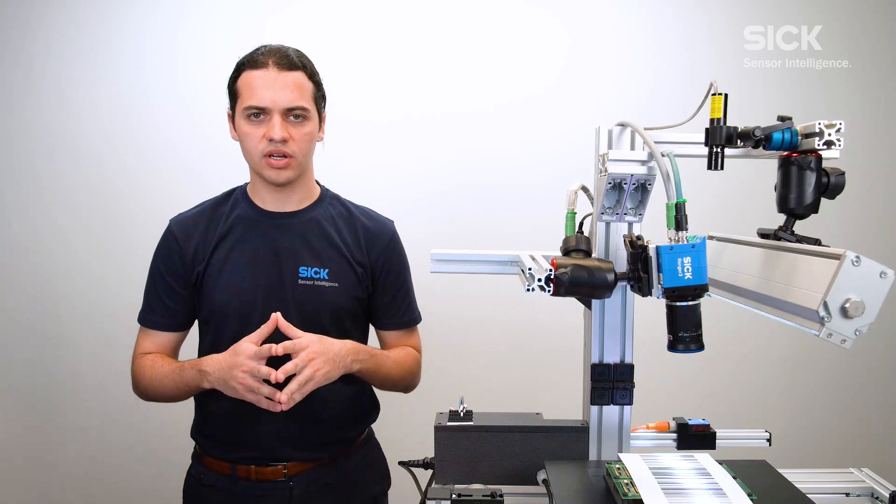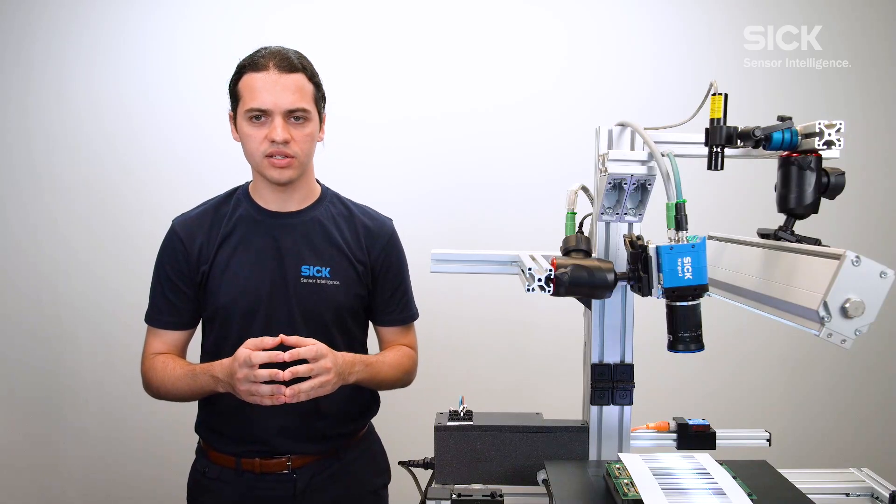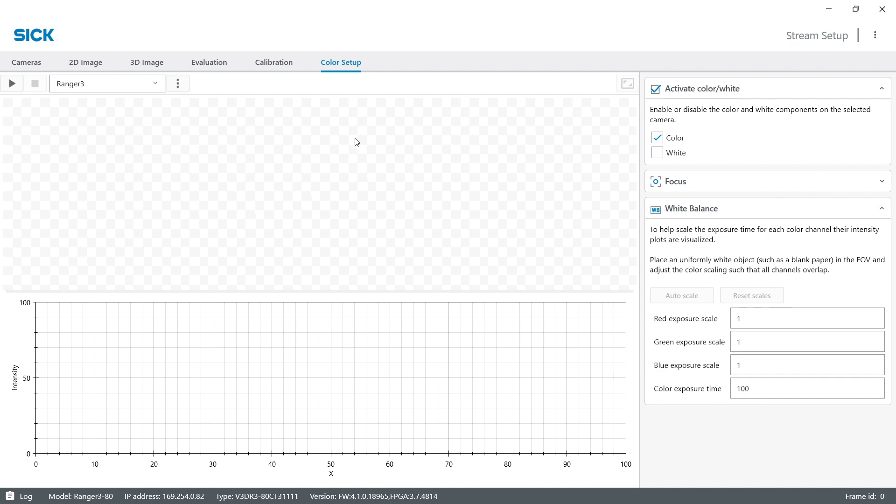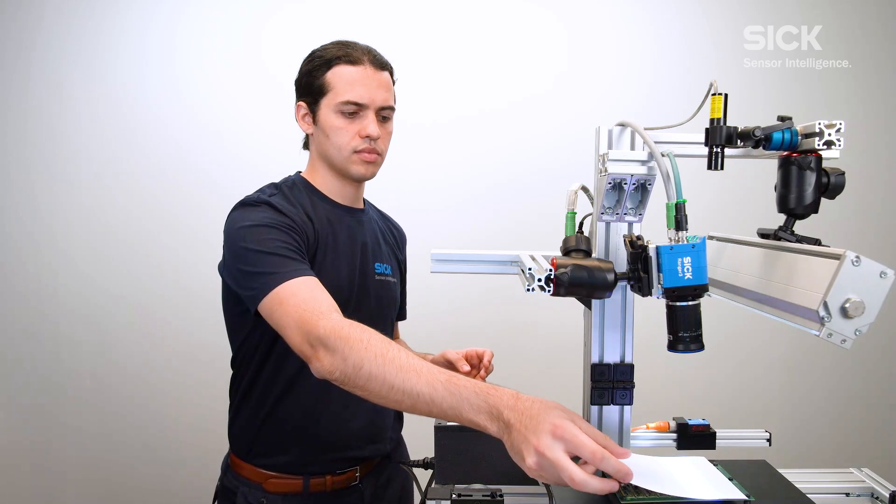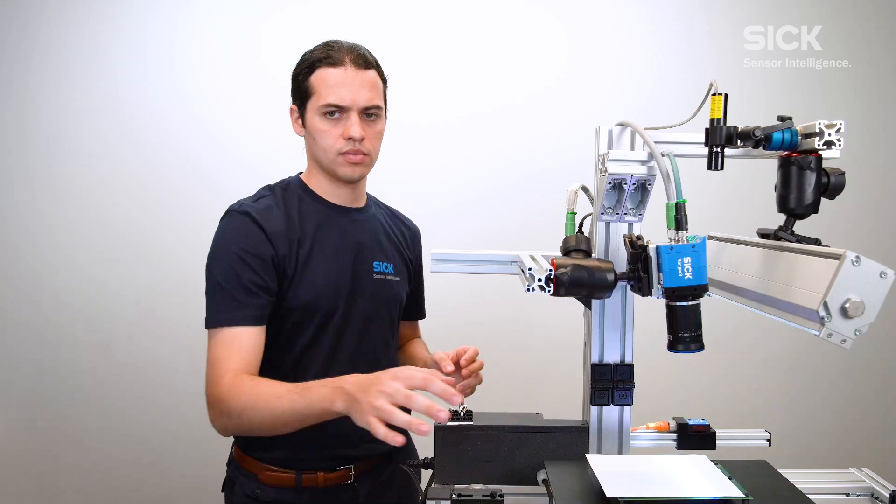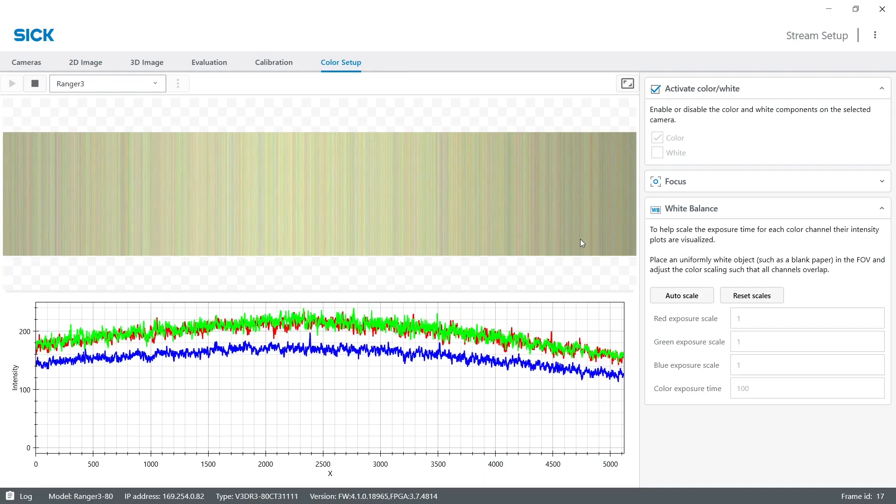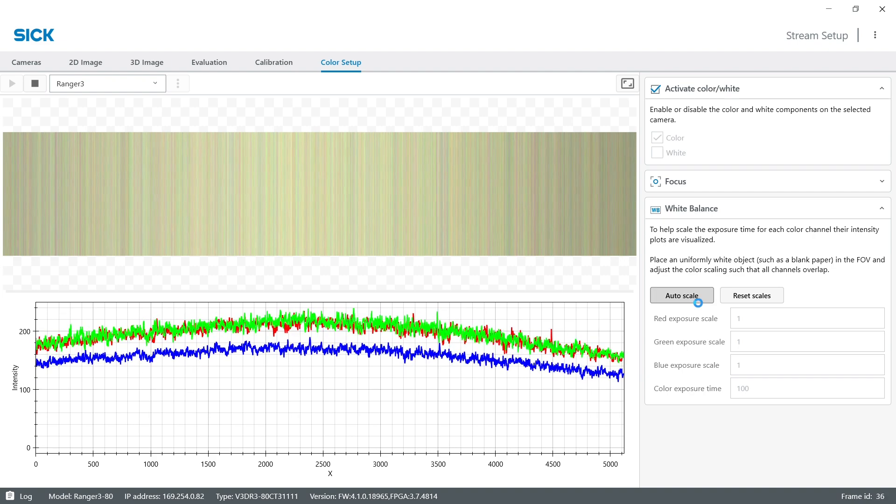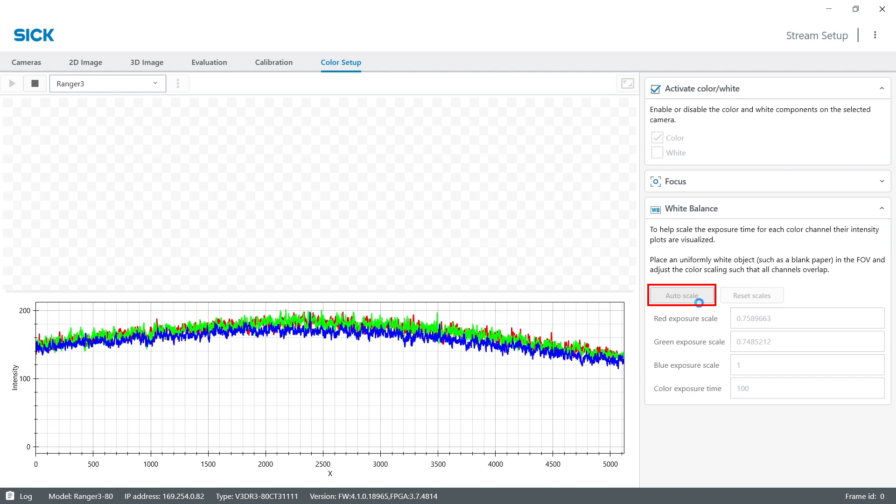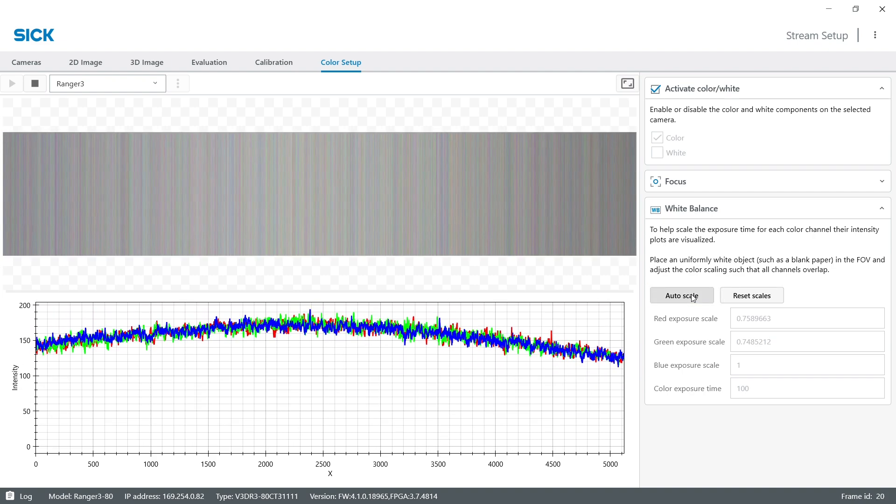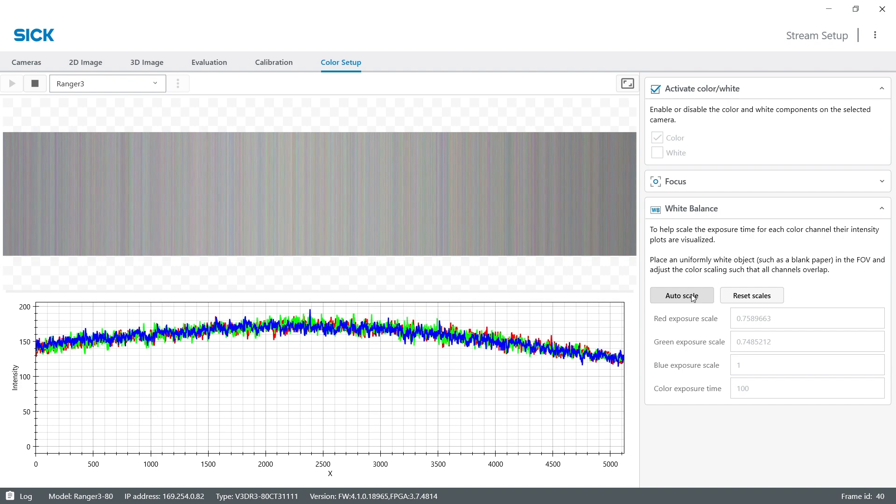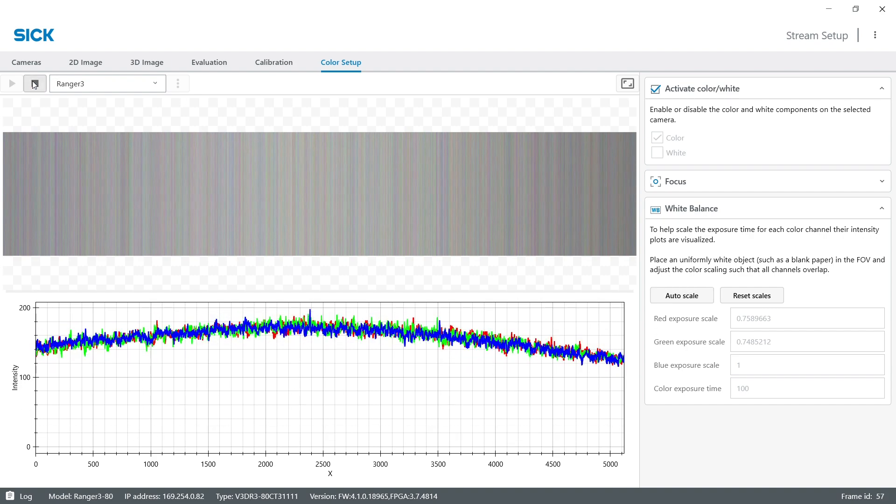Finally, the exposure of the color lines can be scaled for white balancing. Open the white balance section and place a white target in the field of view. And then run the camera. In case the intensity plots for the color need to be scaled for overlap, you can press auto scale. And this will automatically choose suitable exposure scales.